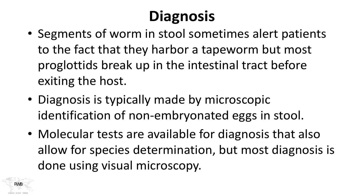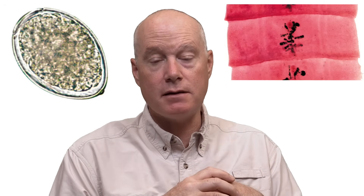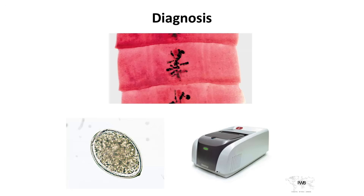Diagnosis is usually done by microscopic examination of the stool for eggs. There are also molecular tests which not only help with diagnosis but can help with species determination. Most diagnosis would be done by stool ova and parasites, looking for the ova under visual microscopy. Here is one of the eggs, and here is our nucleic acid amplification testing apparatus.